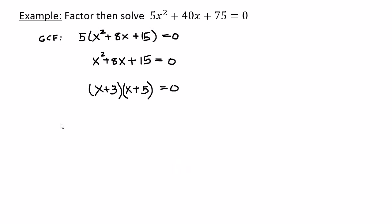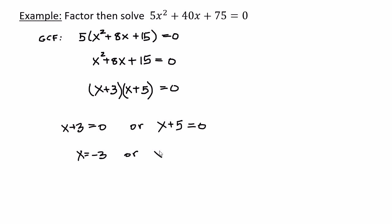Now that the equation is factored, I can solve it. Using the zero products property: x + 3 = 0 or x + 5 = 0. So either x = -3 or x = -5. Those are the two solutions to this quadratic, so the solution set is {-5, -3}.